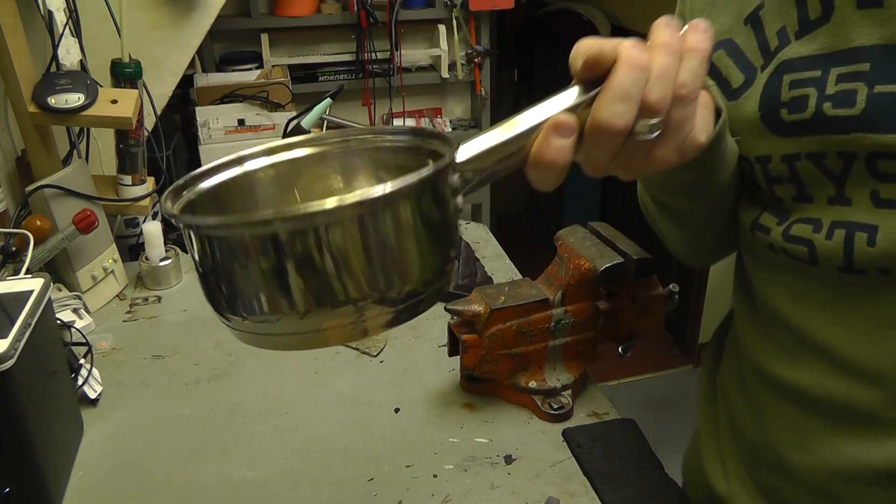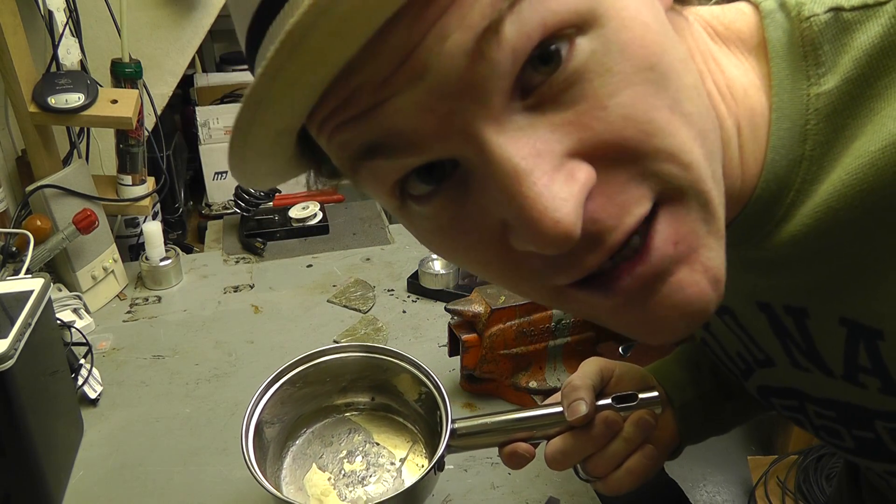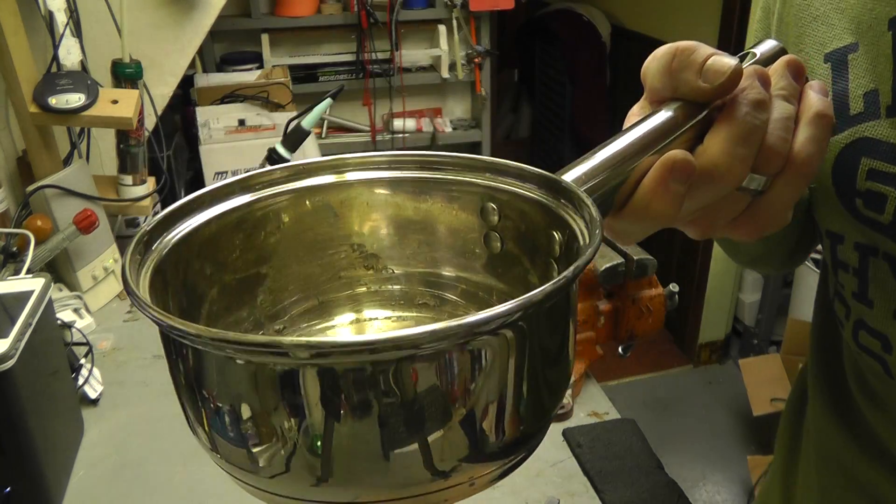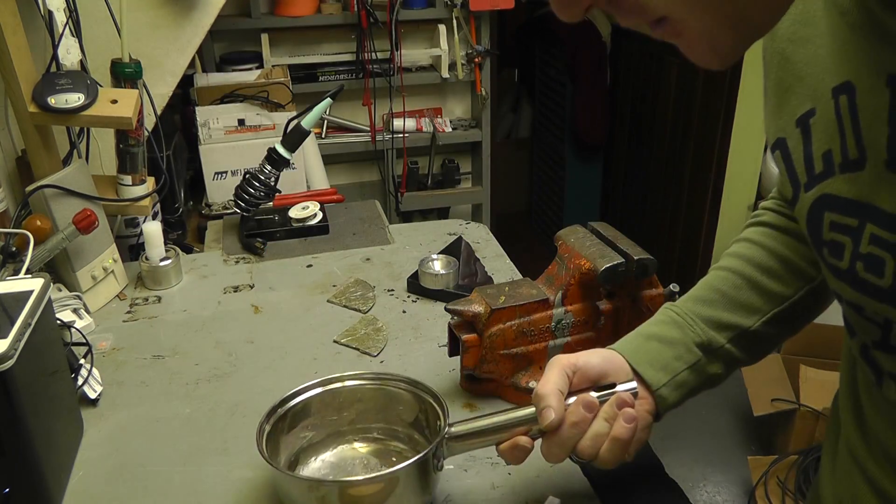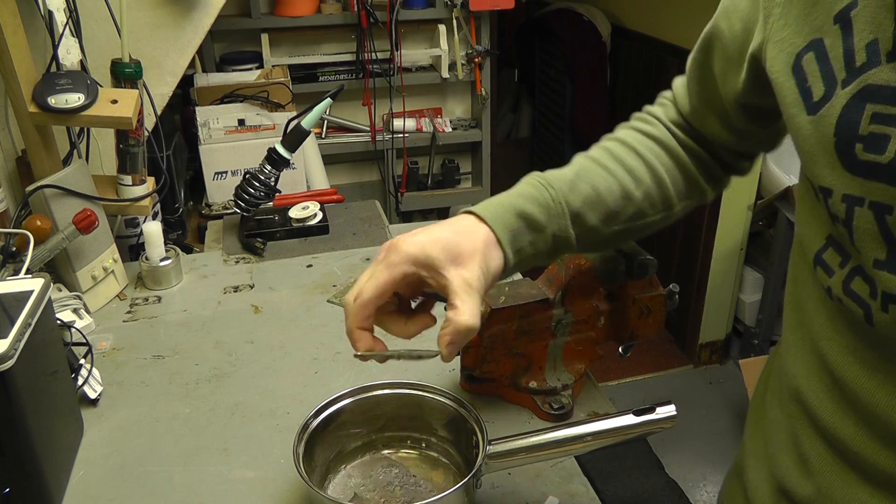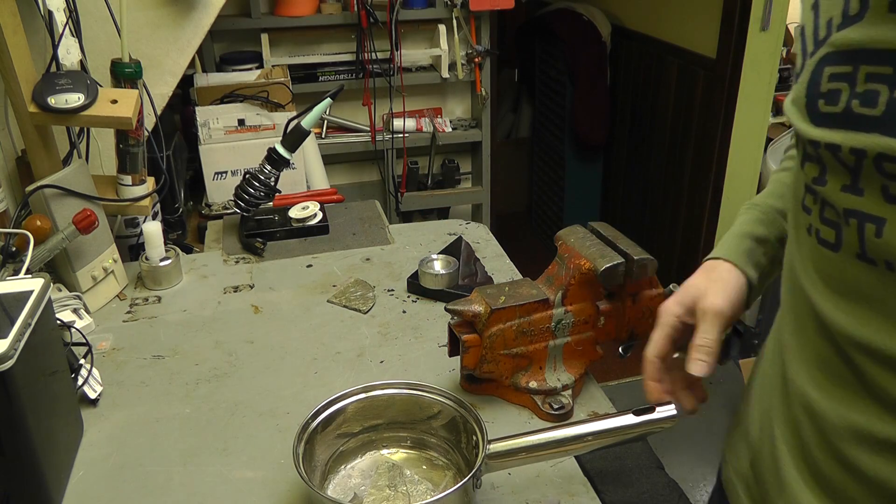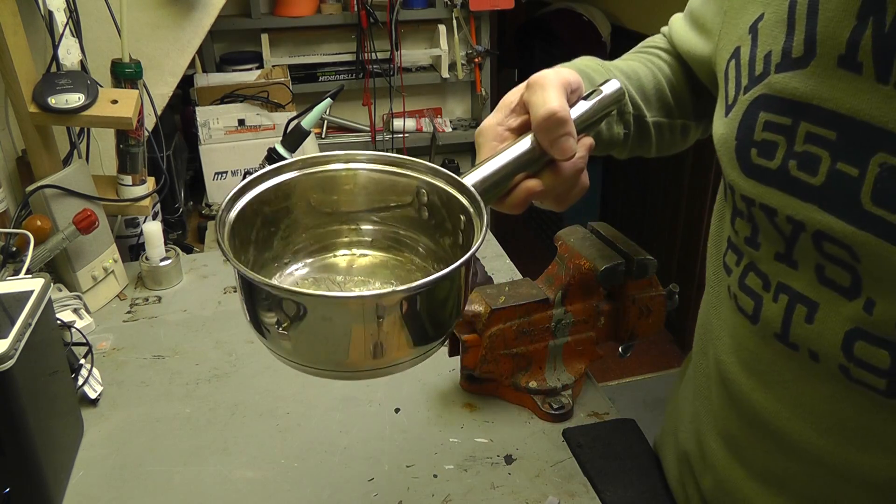This is an old pan. Do not use your wife's pan. She will be very mad at you. Okay, don't do that. Find you a scrap pan at like Goodwill or something. And you take your bismuth and melt it down. Now this melts really low temperatures. I actually melted this on the stove. You don't need a burner or anything like that. Just stick it right on the stove.